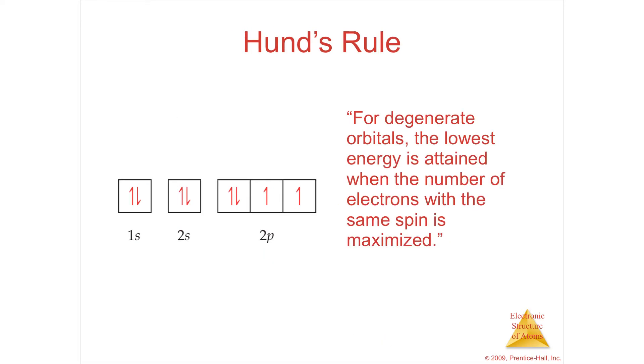Hund's rule says that for degenerate orbitals, remember, same rent, you will always give one girl a room by herself before you double them up. They're spinning in different directions. And it's energetically more beneficial to have them all spinning in one direction than to have paired spin. So the 1s is full. There is no other degenerate 1s.